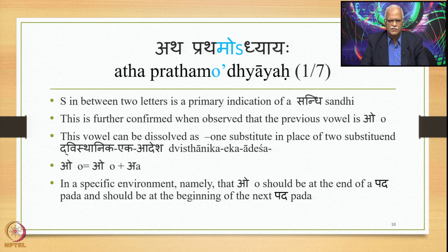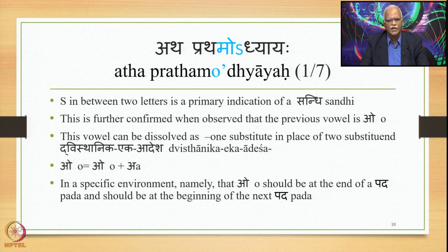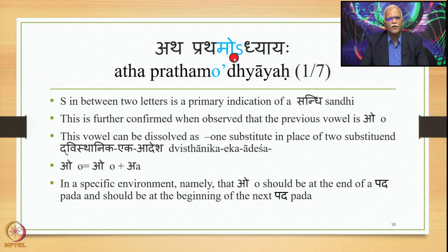Now let us take examples from Srimad Bhagavad Gita and try to figure out strategies with the help of which Sandhis can be identified and split. These strategies could be helpful in all three scenarios described earlier. Let us take the very first line: Atha Prathamodhyayah. This letter 'mo' and 's' are put in blue colour to indicate that they could be possible candidates of Sandhi or a substitute.